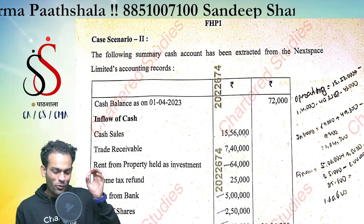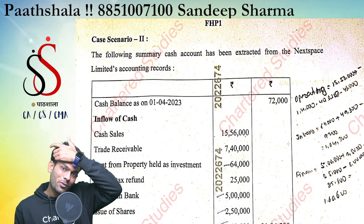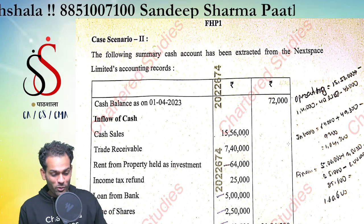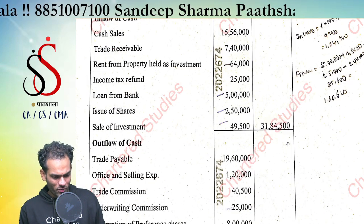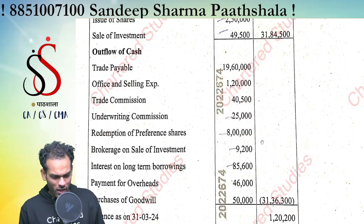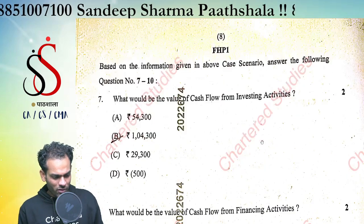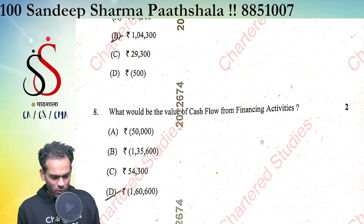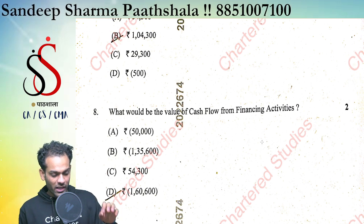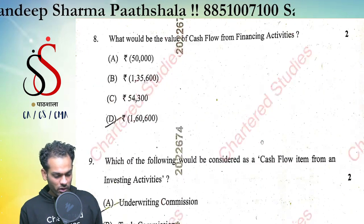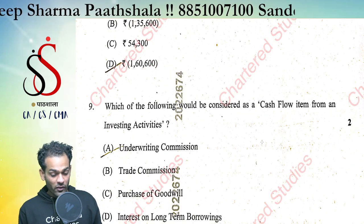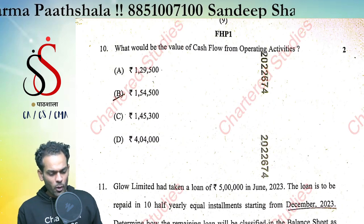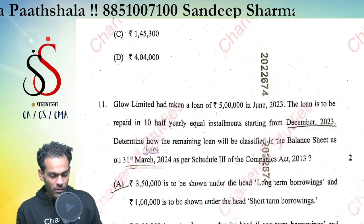Next is the cash flow statement — very easy. As I have said many times, the institute is asking cash flow statement questions only in MCQ form, and this is a straightforward question. The correct answers are: cash flow from investing activity 54,300; cash flow from financing activity negative 1,60,600; purchase of goodwill falls under investing activities; and cash flow from operating activities 1,54,500.